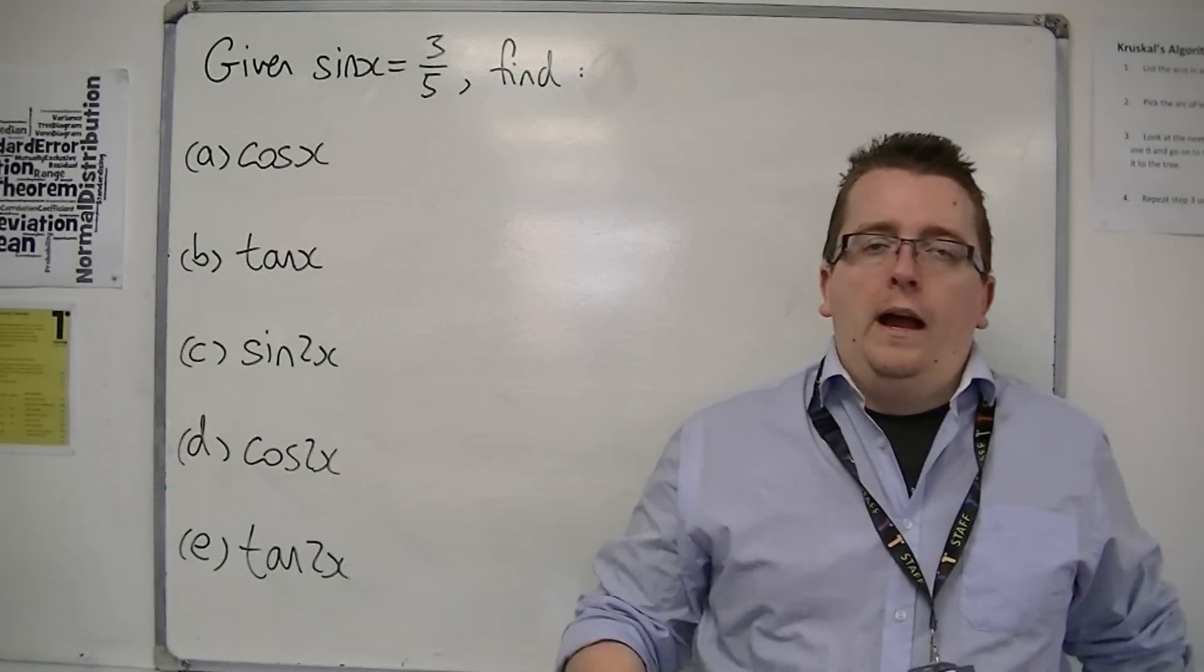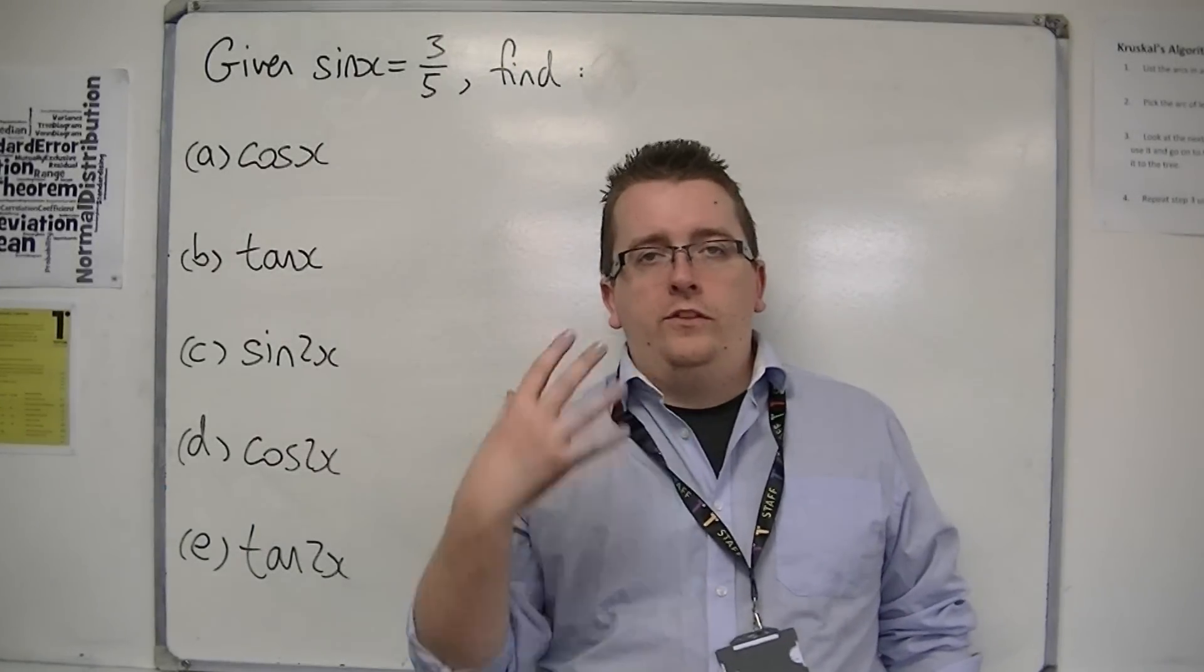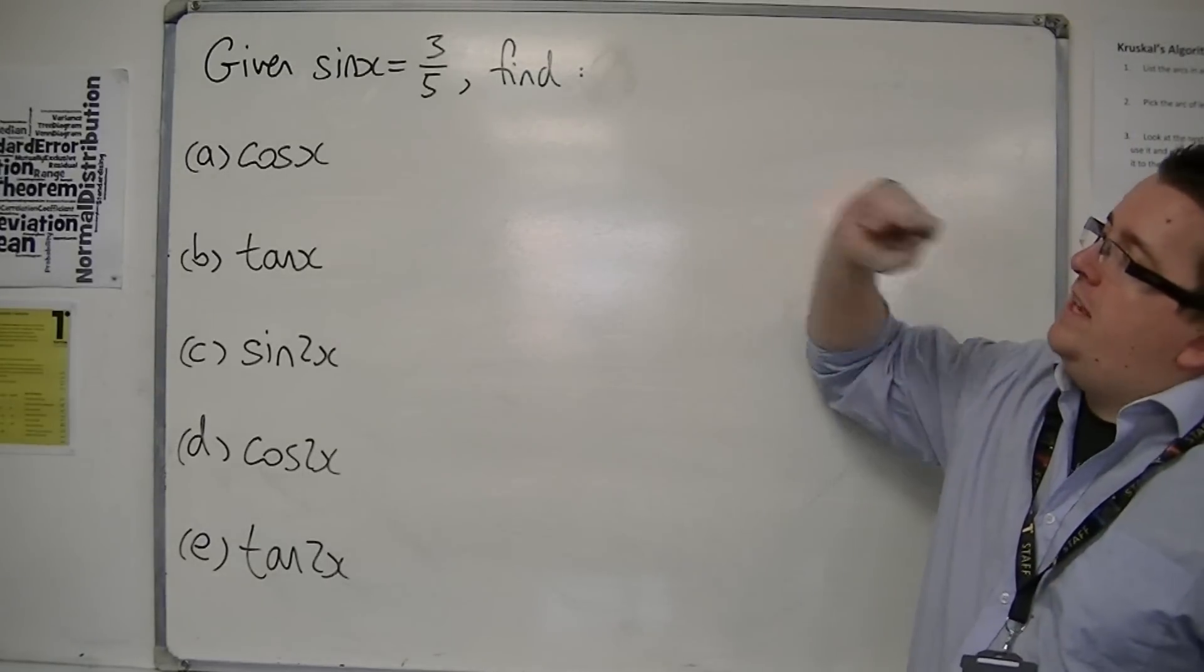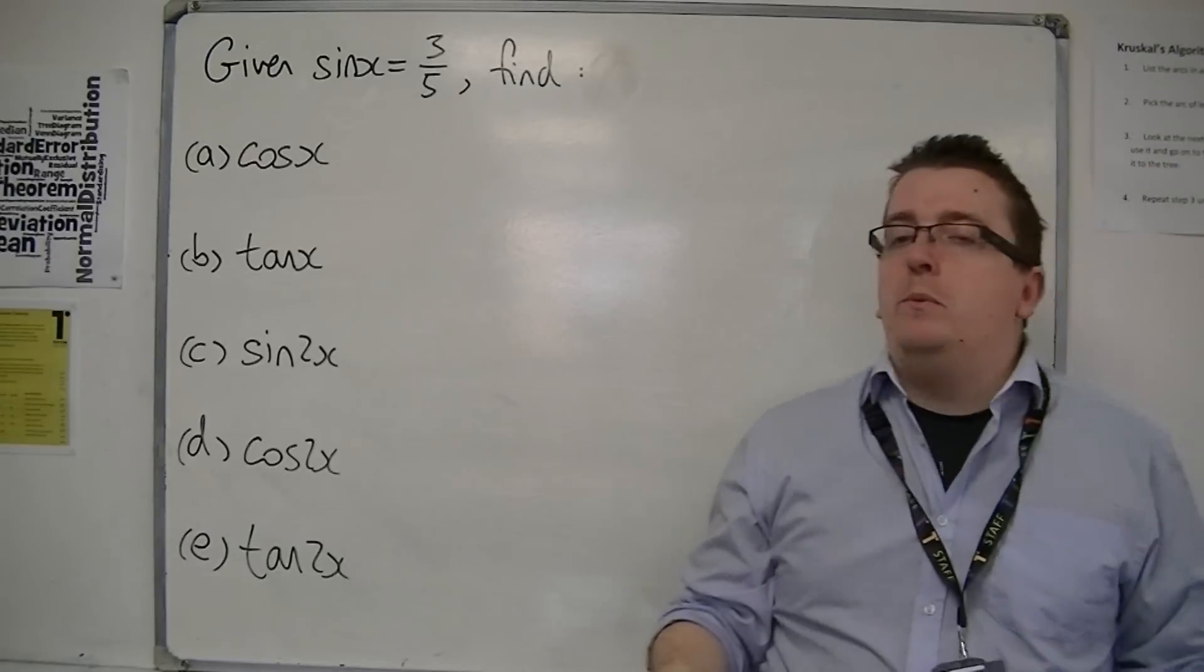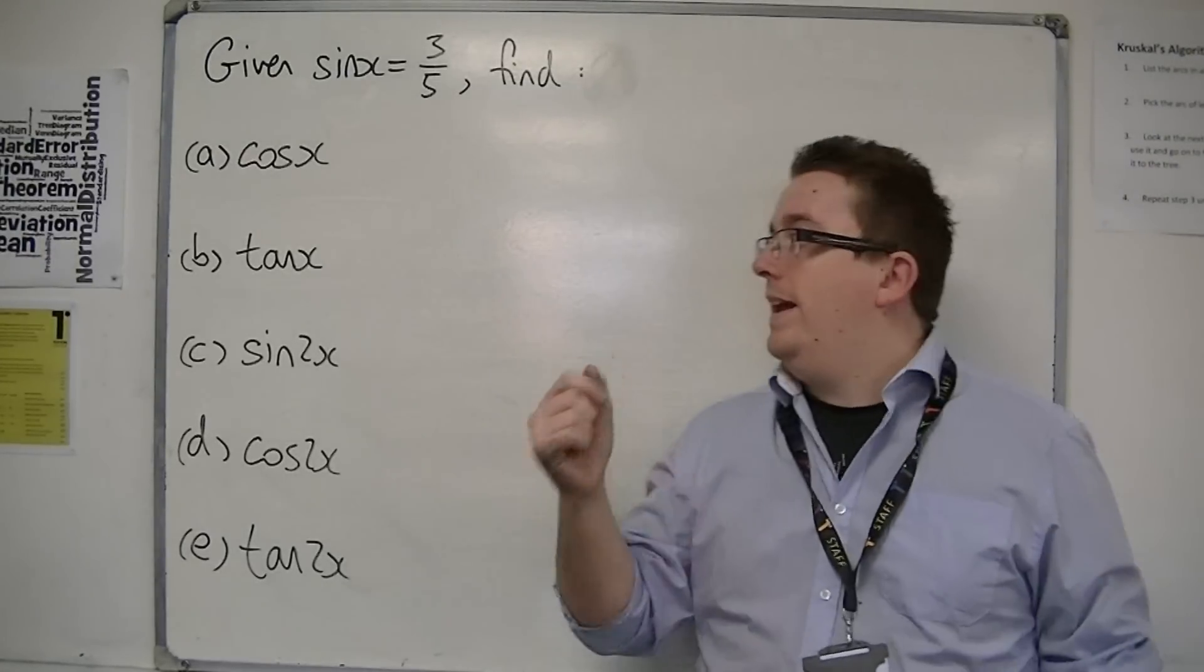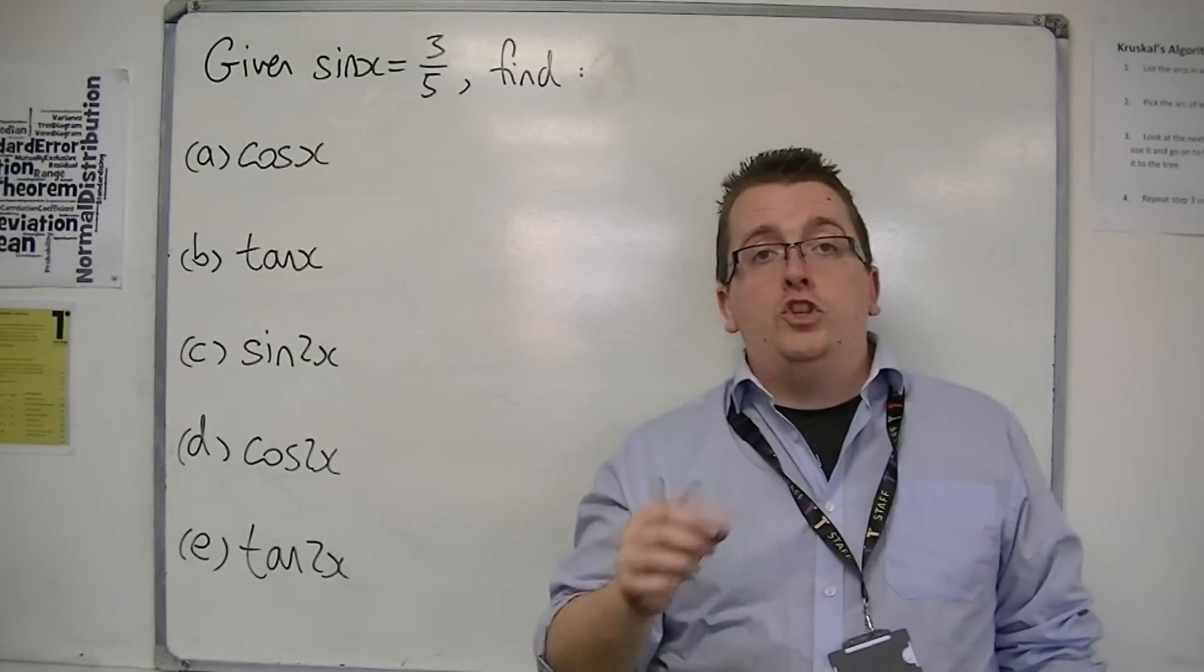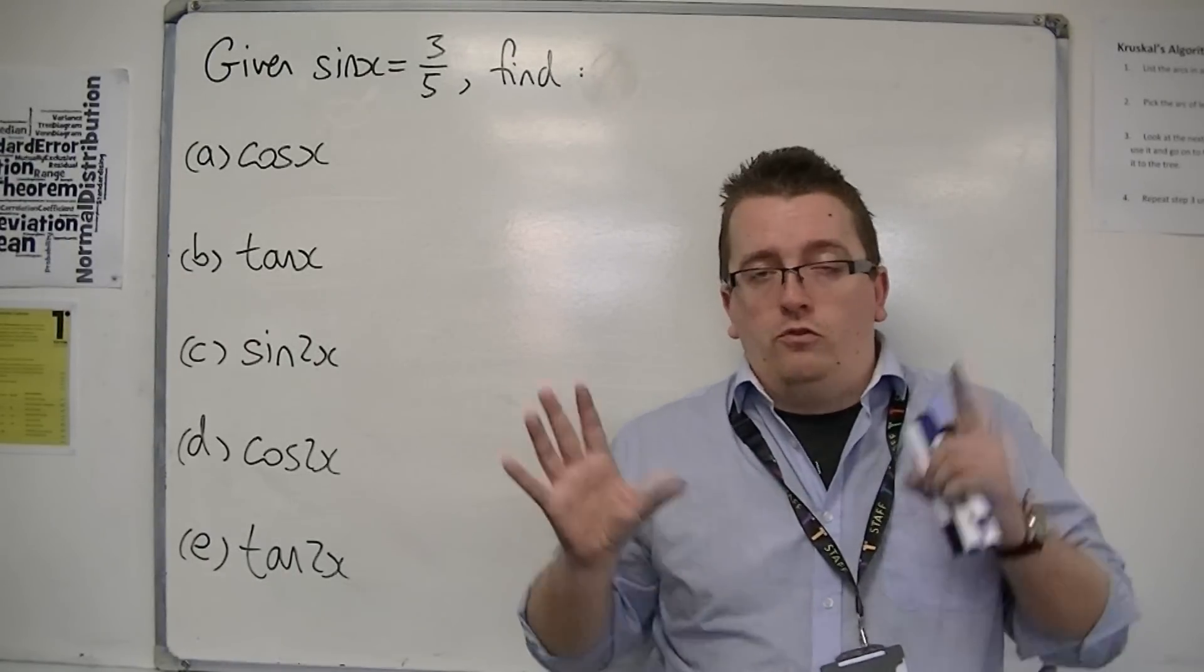In this video, I'm going to continue with the trigonometry part of the course. Given that sine x is 3/5, we want to find cos x, tan x, sine 2x, cos 2x, and tan 2x. I want to show you how to do this in very straightforward ways.